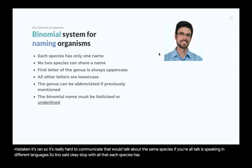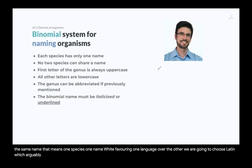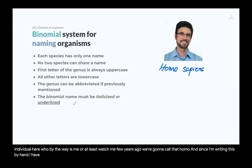Each species has only one scientific name, and no two species can share the same name — one species, one name. To avoid favoring one language over another, Latin was chosen. This individual here — which, by the way, is me, or at least was me a few years ago — we're going to call Homo sapiens. Since I'm writing this by hand, I have to underline it. So if you're writing your test, paper two, underline it.